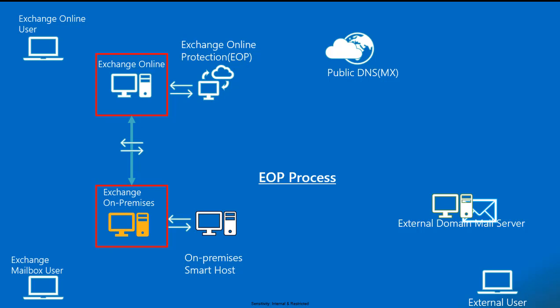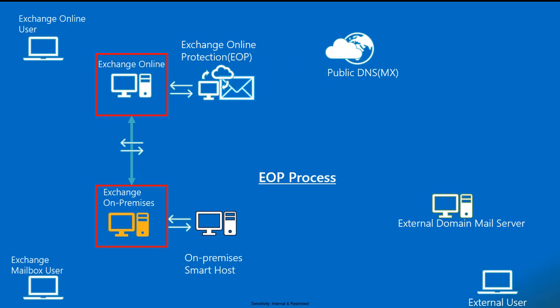We've discussed inbound and outbound mail flow in a hybrid Exchange setup. Now let's talk about how Exchange Online Protection processes mail when it is received from the external world. When mail arrives at EOP, it begins scanning — let's look in detail at how Exchange Online Protection processes this scanning.